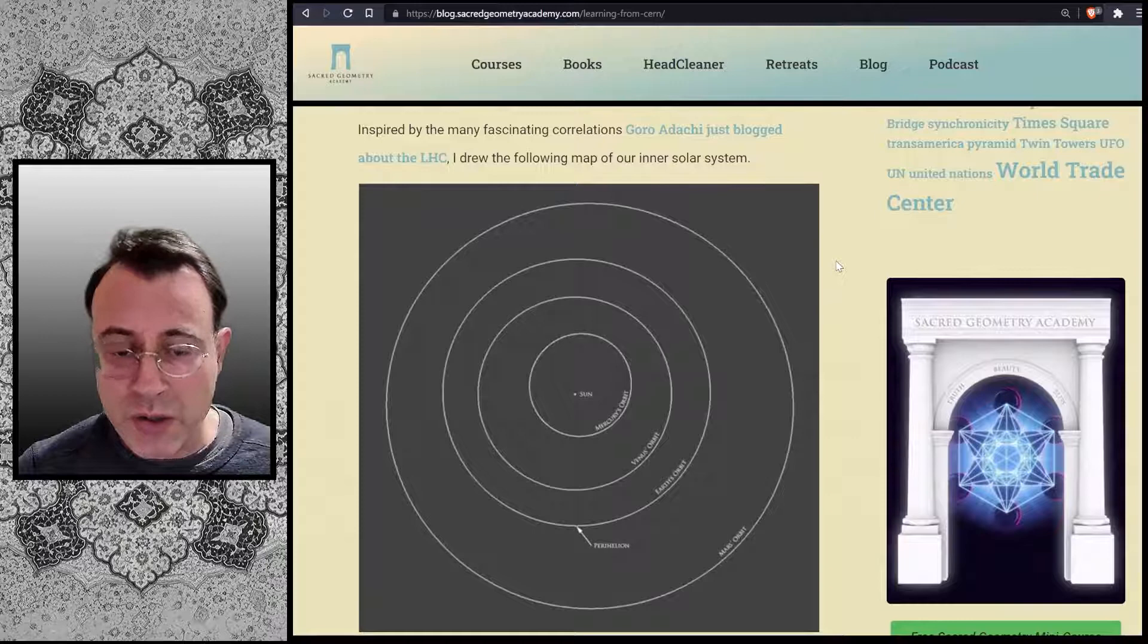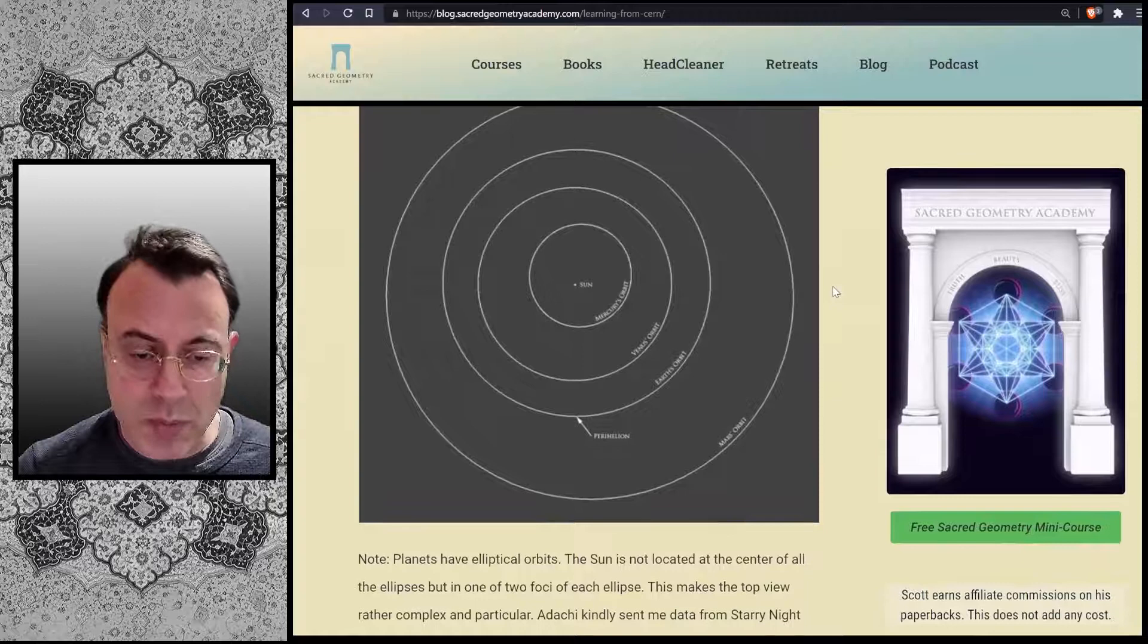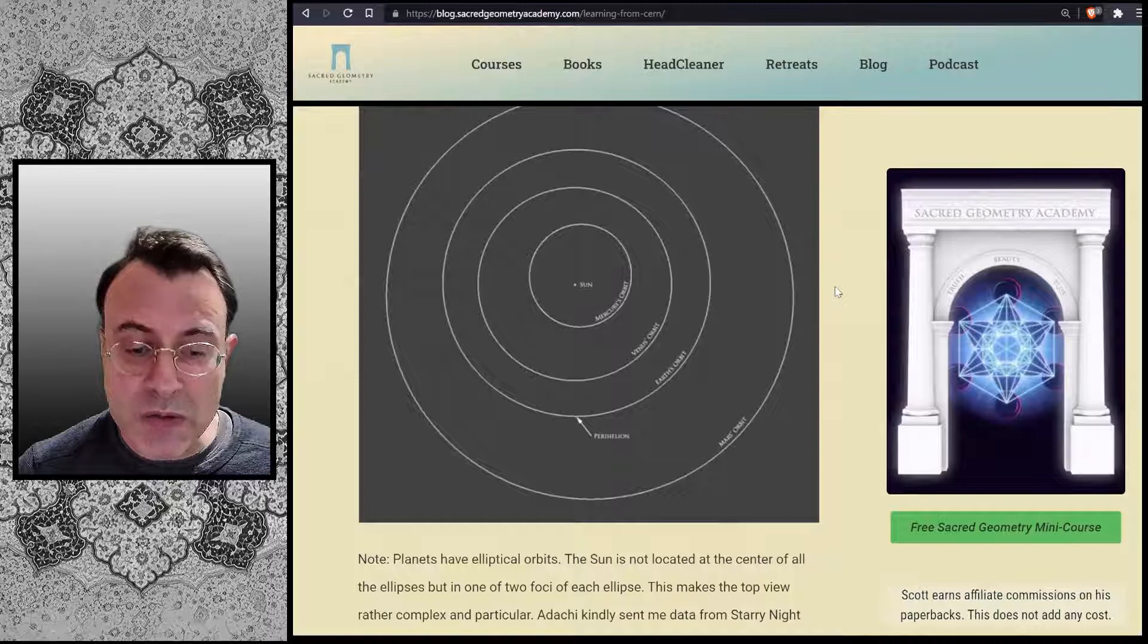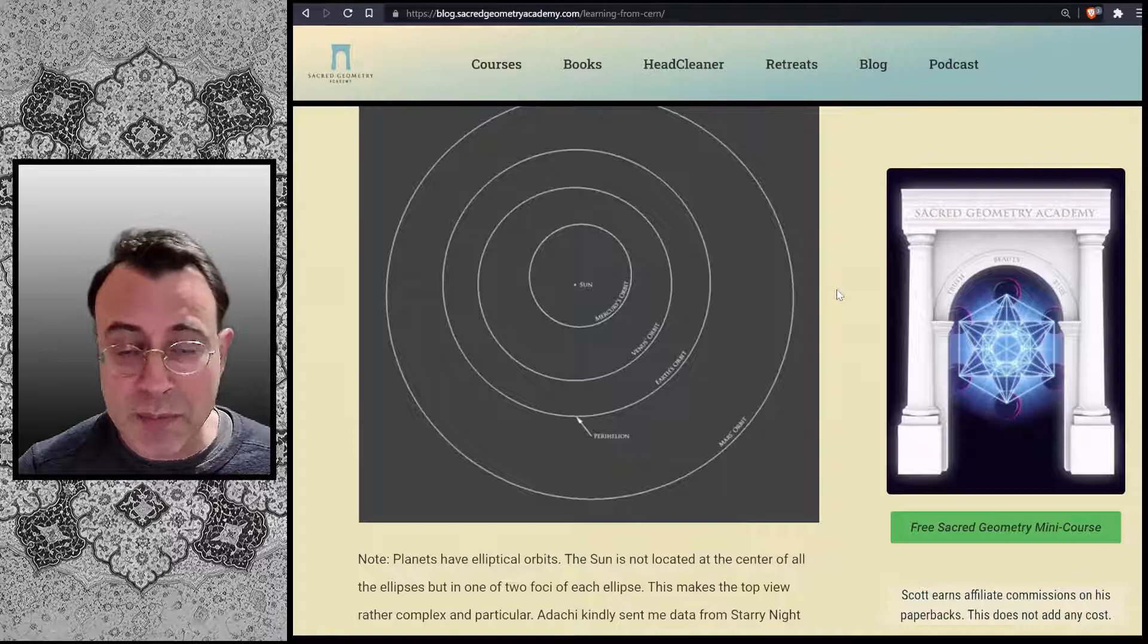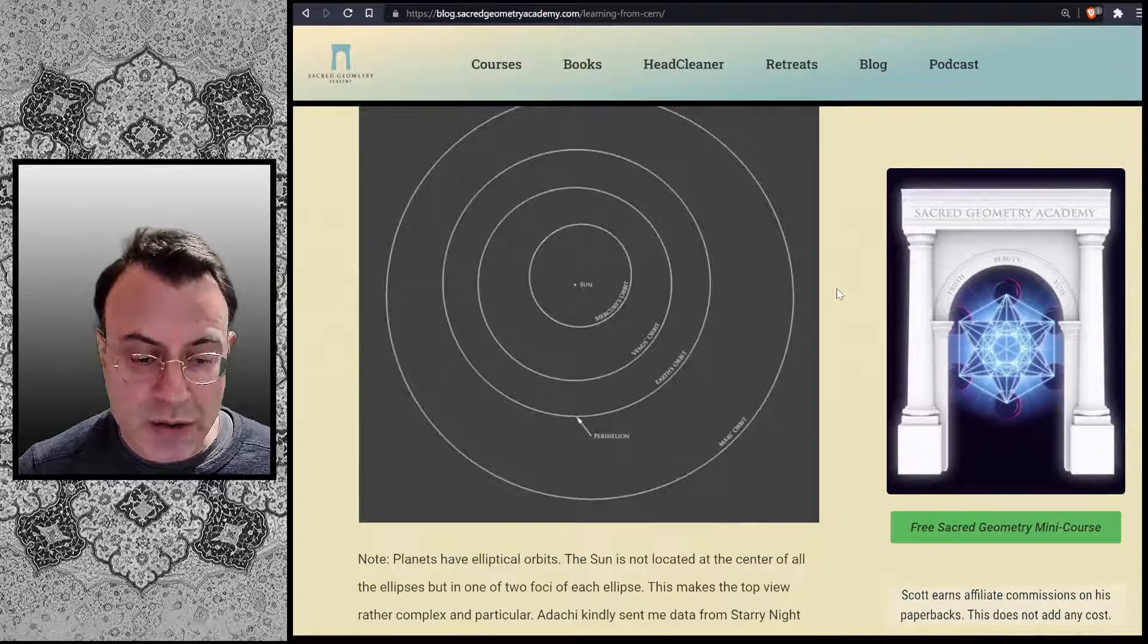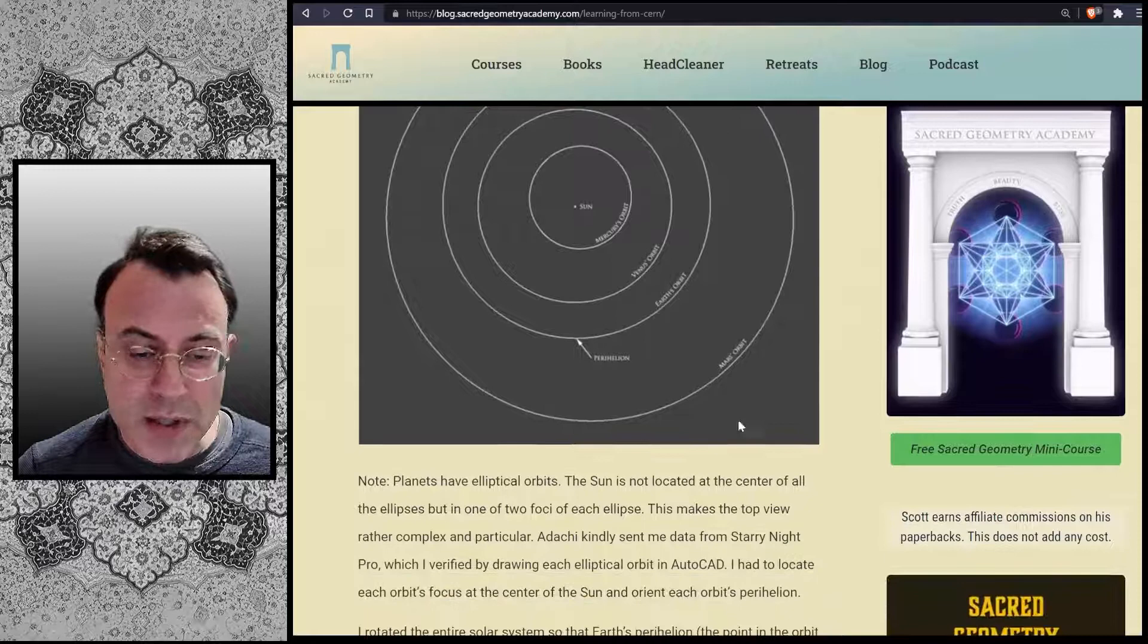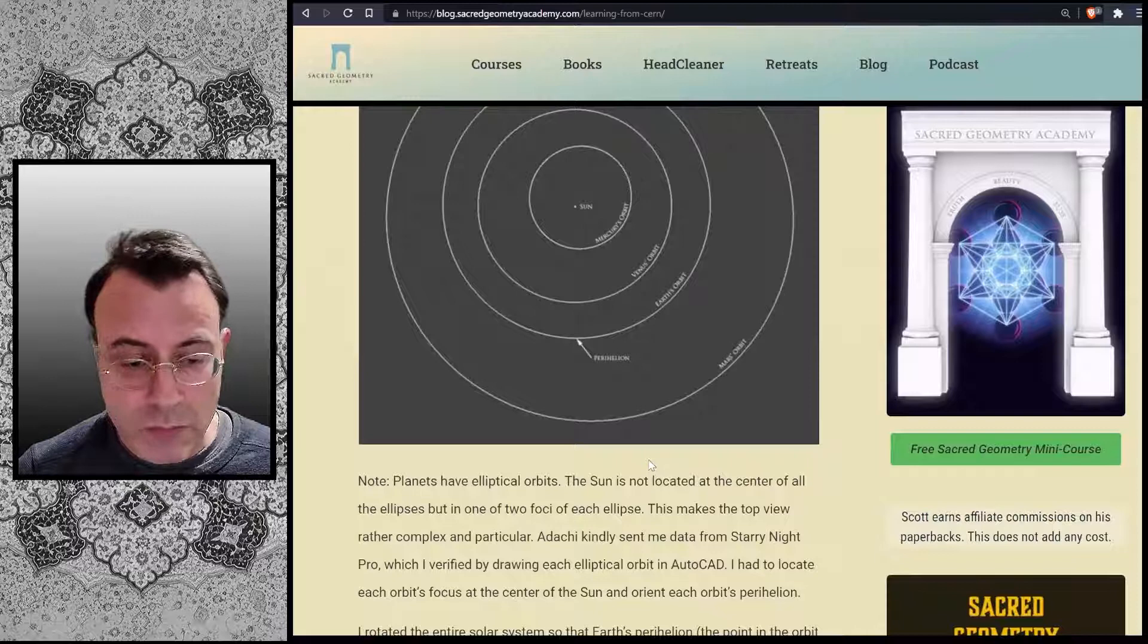Planets have elliptical orbits. The Sun is not located at the center of all the ellipses, but in one of the two foci of each ellipse. This makes the top view rather complex and particular. Adachi kindly sent me data from Starry Night Pro, which I verified by drawing each elliptical orbit in AutoCAD. I had to locate each orbit's focus at the center of the Sun and orient each orbit's perihelion.